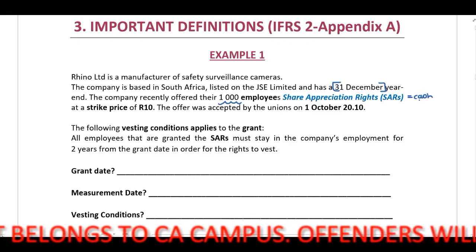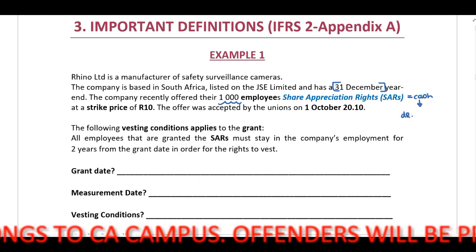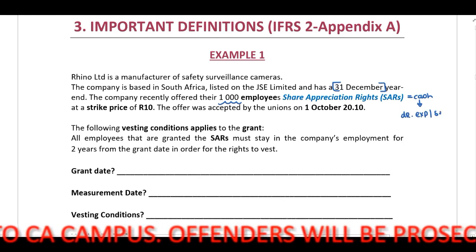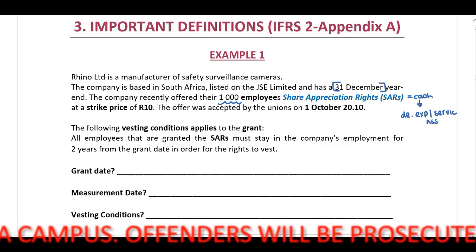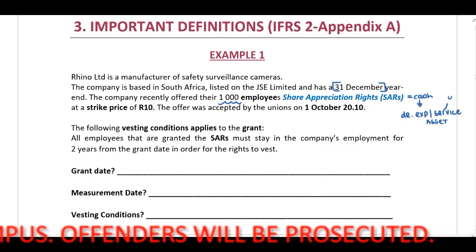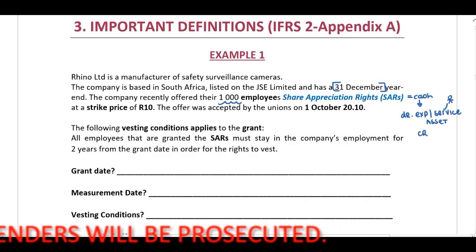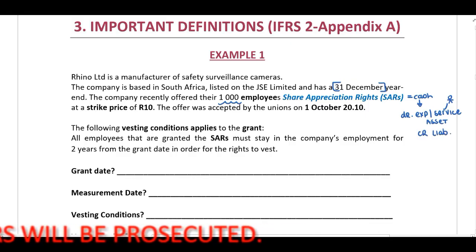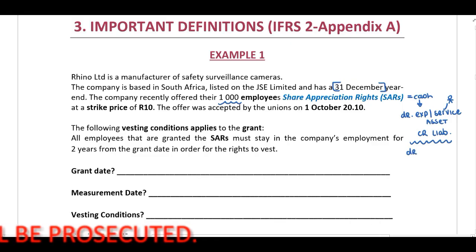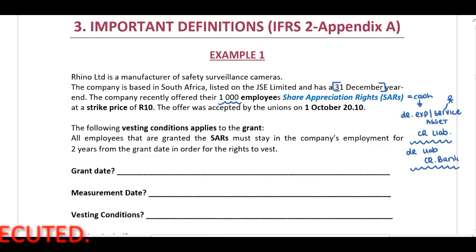You need to know that this will be cash-settled. When we refer to cash-settled, you will have to debit either the expense or the asset. The expense will be the service provided by the employees, and then we need to recognize our employee cost. You will credit a cash liability, and once this is settled, you will debit the liability and credit the bank account. I'm going to write this down throughout our lecture.